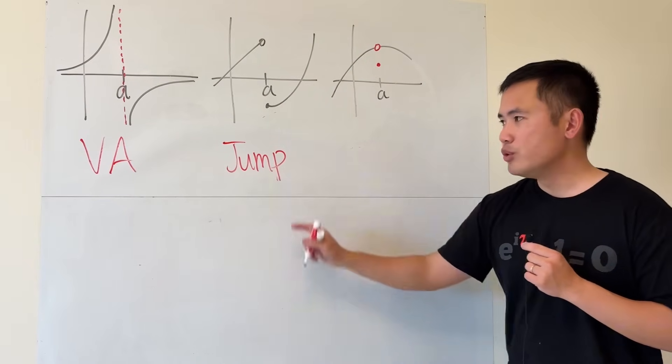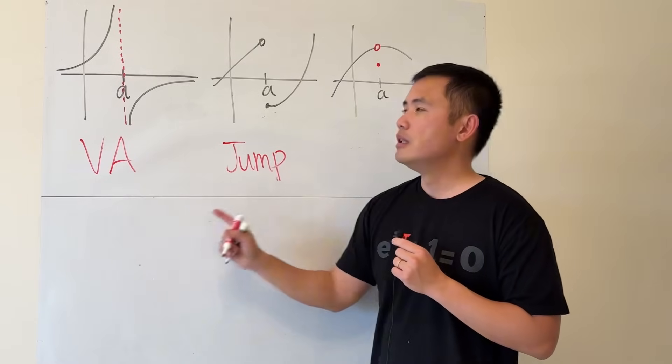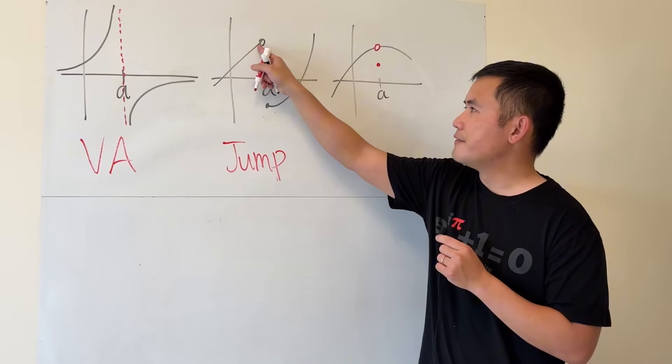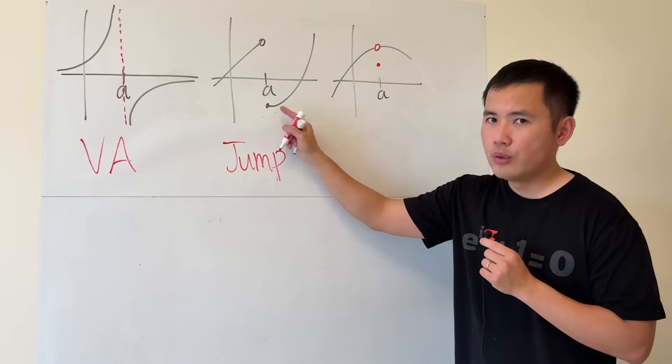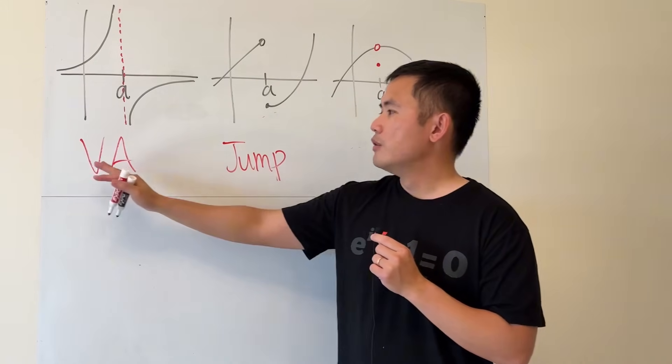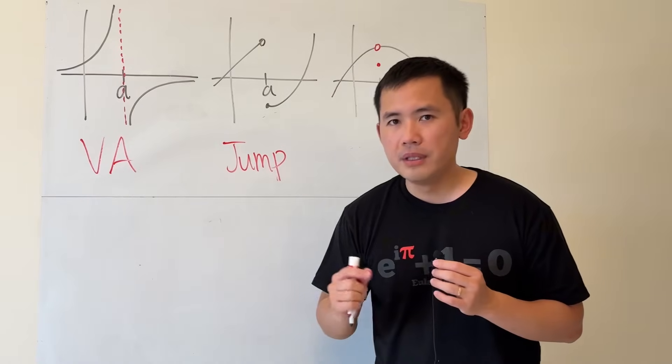And the difference between a jump versus a VA is that a jump goes from a finite value to a different finite value, as opposed to, for vertical asymptote, you have to be dealing with infinity.